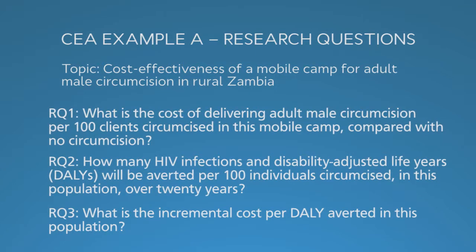We have divided the cost-effectiveness analysis inquiry into three research questions focused on costs, health effects, and cost-effectiveness. The first question is: what is the cost of delivering adult male circumcision per 100 clients circumcised in this mobile population over 20 years? Question 2: how many HIV infections and disability-adjusted life years (DALYs) would be averted per 100 individuals circumcised in this population over 20 years, compared to no circumcision? Question 3: what is the incremental cost per DALY averted in the population versus no circumcision?